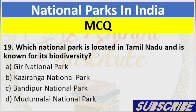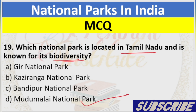Question 19: Which National Park is located in Tamil Nadu and is known for its biodiversity? A. Gir National Park, B. Kaziranga National Park, C. Bandipur National Park, D. Mudumalai National Park. Answer: D. Mudumalai National Park.